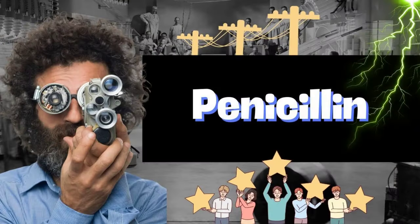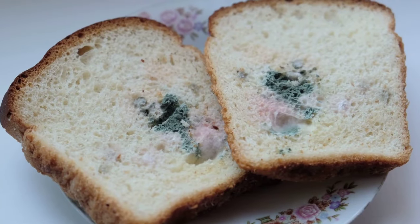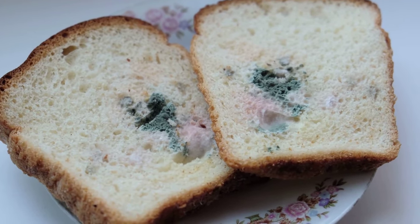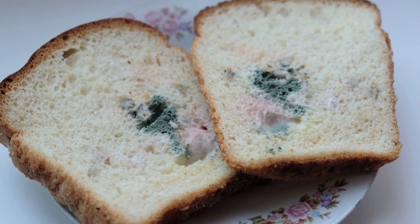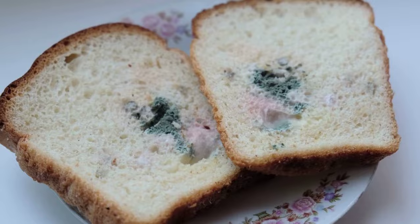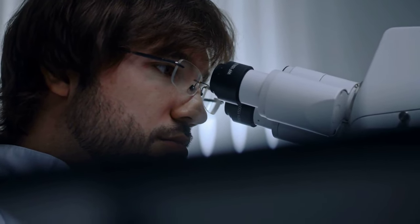Penicillin, 1928. Discovered by Alexander Fleming in 1928, penicillin was the first antibiotic capable of effectively combating bacterial infections, heralding a new era in medical science. This groundbreaking discovery has saved millions of lives and remains an essential component of medical treatment worldwide. By ushering in the age of antibiotics, penicillin dramatically transformed the landscape of healthcare and disease management.